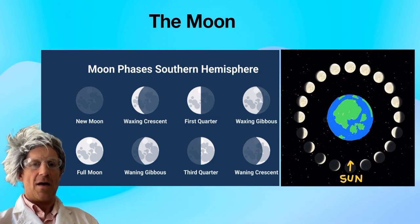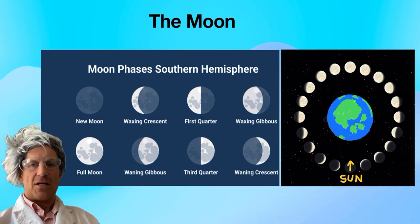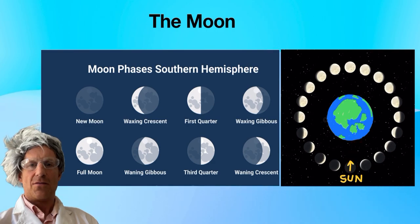Moving on to the first quarter. Now the first quarter is actually a half moon but because it's a quarter of the way through the cycle that's how it gets its name. So please don't think it's a quarter, it's actually a half moon.